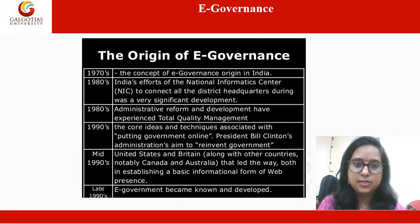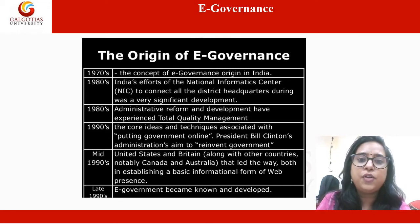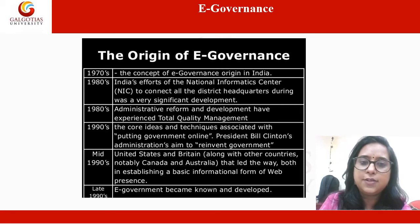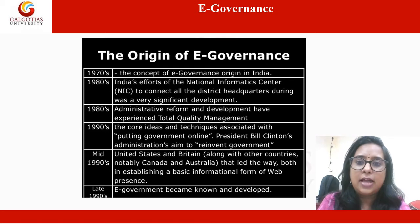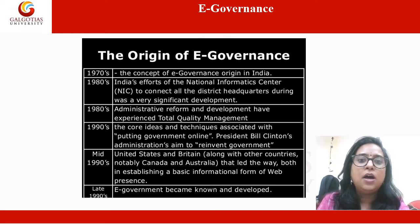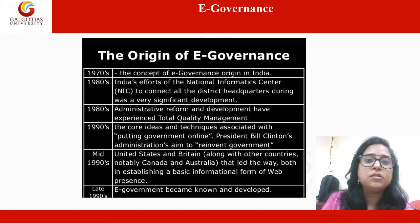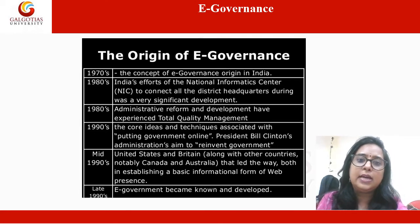The origin of e-governance: e-governance originated in India during the 1970s with a focus on in-house government applications in the areas of defense, economic monitoring, planning, and deployment of information and communication technology to manage data-intensive functions related to elections, census, tax administration, etc. The establishment of the Department of Electronics in 1970 was the first major step. The National Informatics Center, established in 1977, launched the District Information System Programme to computerize all district offices. The main thrust for e-governance was provided by the launching of NIC-NET in 1987, the National Satellite-Based Computer Network.